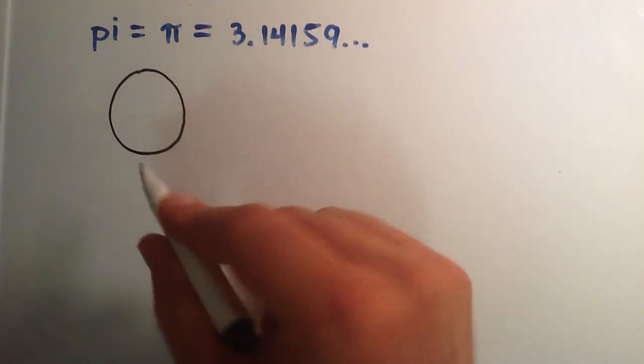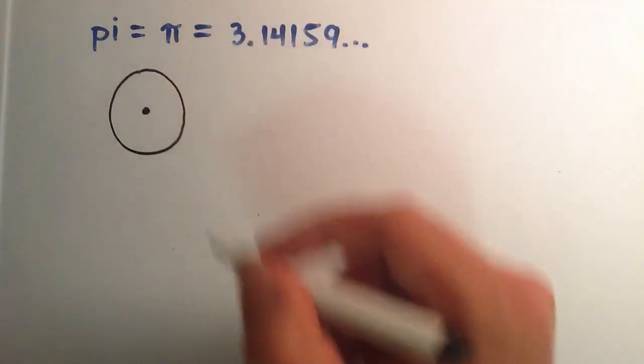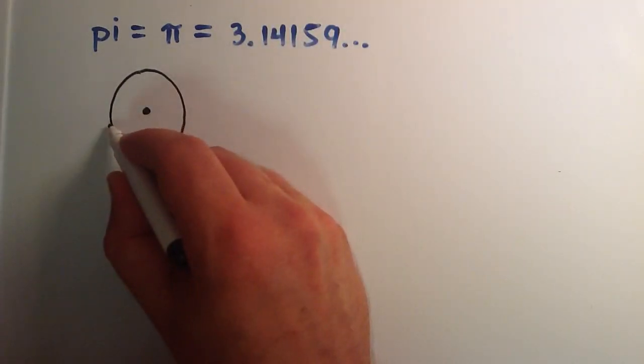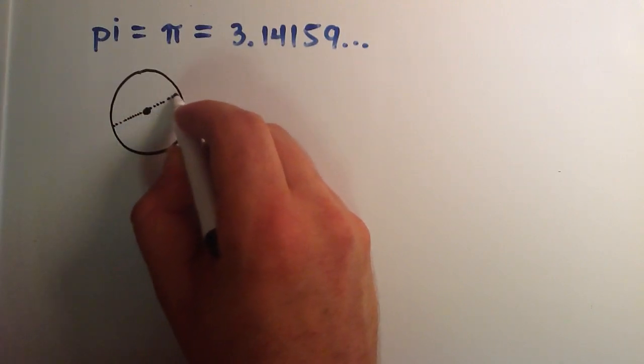If we have a circle here and we find the center point of the circle, what we do is we start at any edge and we travel through the center of the circle and stop at the other edge.